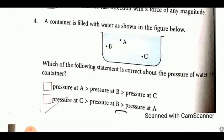Now a container is filled with water as shown in the figure given below. See, there's point B, point A, and point C. Now we have to see among these, which statement is correct about pressure - on which is pressure maximum. The one which is at the deepest depth will have maximum pressure, like pressure at C. Then above it, pressure at B, then above that, pressure at A.